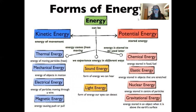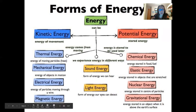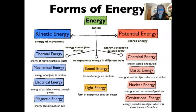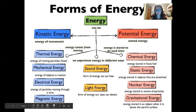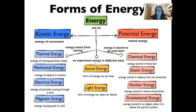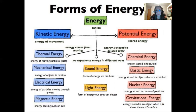Here's a flowchart about forms of energy — energy can be either kinetic or potential. Under kinetic energy we'll talk about thermal, mechanical, electrical, and magnetic energy. Energy can also be experienced as sound energy and light energy, which aren't cleanly classified as kinetic or potential — they're different types we experience in other ways, and we're still learning a lot about them. Sound energy is probably more kinetic, but it could also be argued there's some potential component.